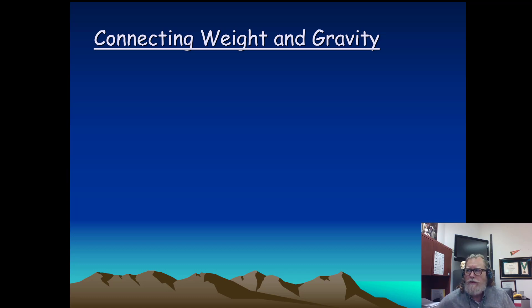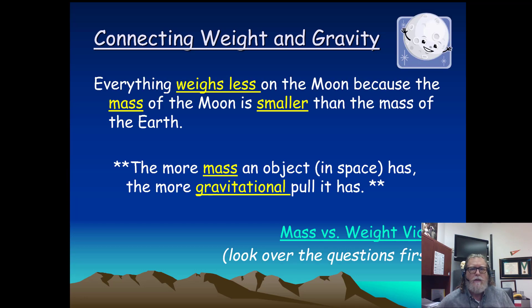Now let's talk about weight and gravity. The Moon. Everything weighs less on the Moon because the mass of the Moon is smaller than the mass of the Earth. The more mass an object in space has, the more gravitational pull it has. There's a link here, mass versus weight, and I'm going to put a link to that on the Canvas site so you'll be able to pull that up.